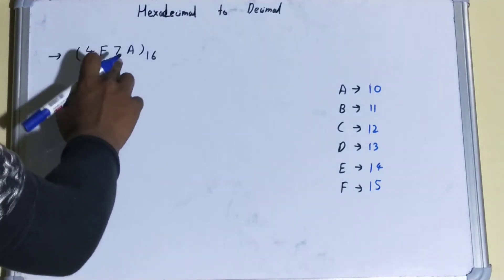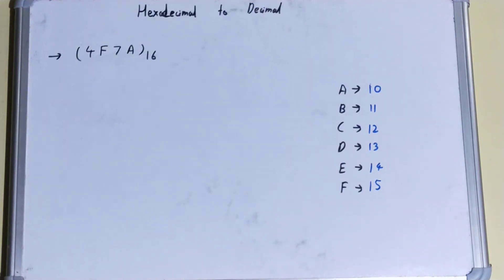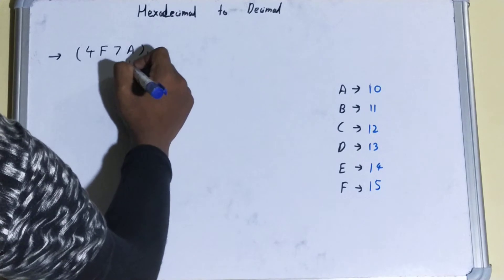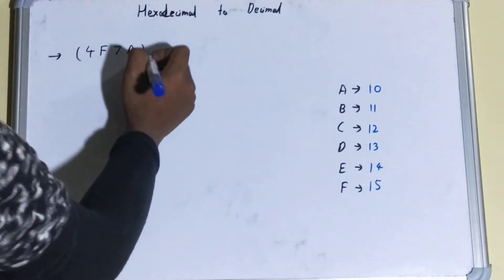So this is our number, that is 4F7A, and this we have to convert to the equivalent decimal number. So how we'll be doing: we'll be doing the same way we used to do from binary to decimal, that is like 2 raised to 2 to power 0. Right here we'll be doing 16 raised to power 0.